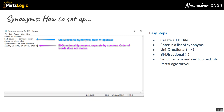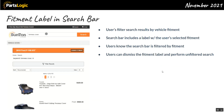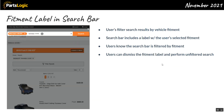So that's synonyms — two flavors, unidirectional and bidirectional. It's really easy to set up by creating a txt file and sending it to us to upload. The next new feature that came out in the last month is what I'm calling the fitment label in the search bar.